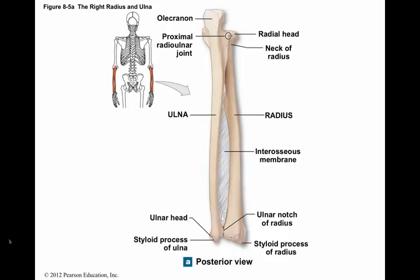The ulna and radius are the two bones of the antebrachium or forearm, and they are parallel to each other. In the anatomical position, the ulna lies medial to the radius. The olecranon is the proximal end of the ulna and is the pointy tip of the elbow. The interosseous membrane is a fibrous sheet that connects the ulna to the radius. Near the wrist, the ulna narrows before ending at the disc-shaped ulnar head. The posterior lateral surface of the ulnar head has a short styloid process, and the distal ulna articulates with the radius at the distal radio-ulnar joint.